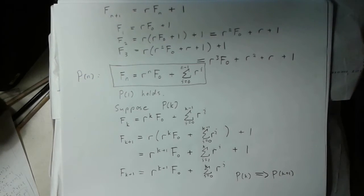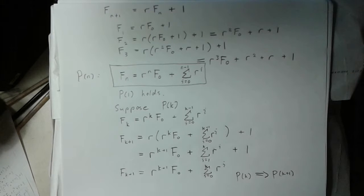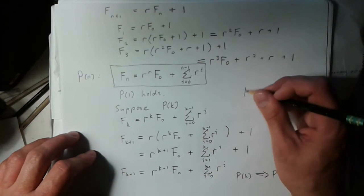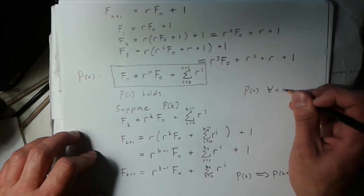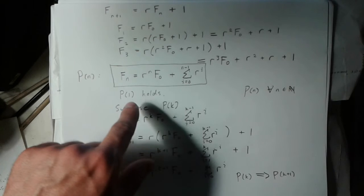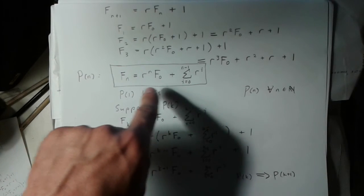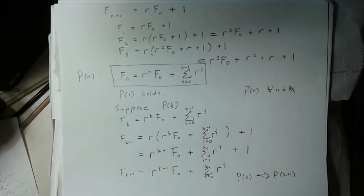And since I know my base case is true, that means that all of the successive cases must also be true. So we've proved that p of n is true for all n, which was exactly what we wanted to prove. This is just the solution to the recurrence relation.